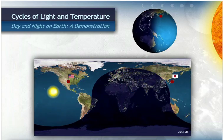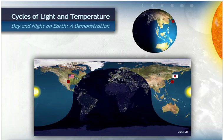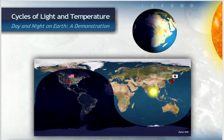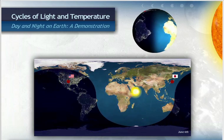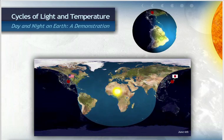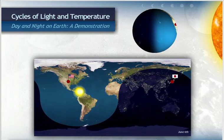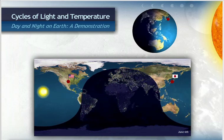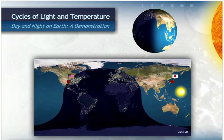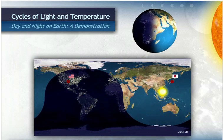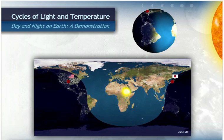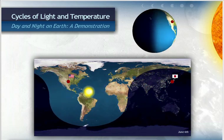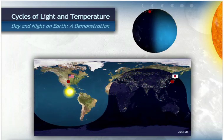As the earth continues to spin, the part of the globe where Japan is located will turn away from the sun and return to nighttime, and other parts of the earth will turn toward the sun. This constant rotating of the earth is what causes us to have day and night.